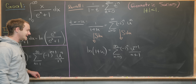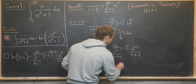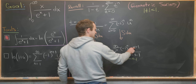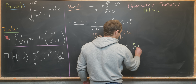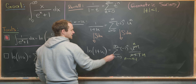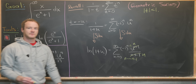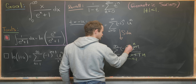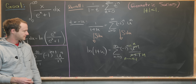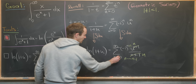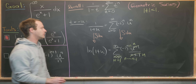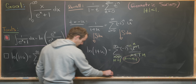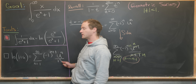Now we make a re-indexing of the sum by replacing n with n minus one. The exponent changes from n plus one to n, the denominator changes to n, and the sign factor changes from minus one to the n to minus one to the n plus one — since n minus one and n plus one have the same parity. The starting index becomes n equals one. After this re-indexing we arrive at the series identity we were going for.